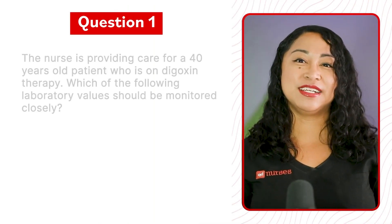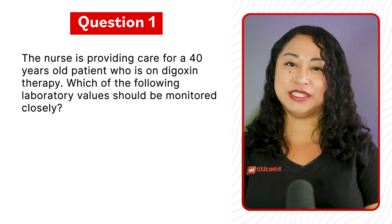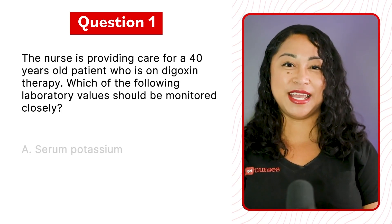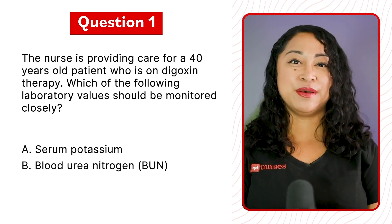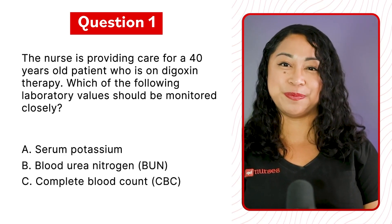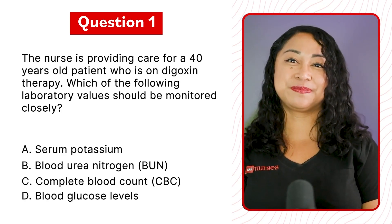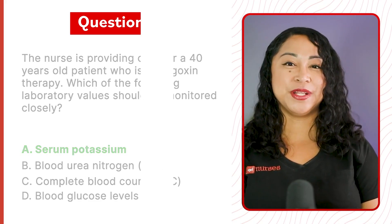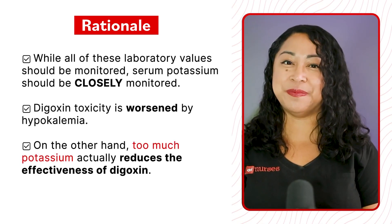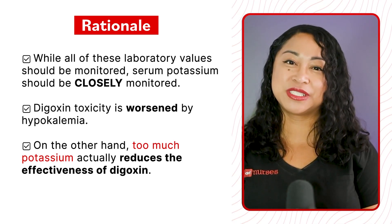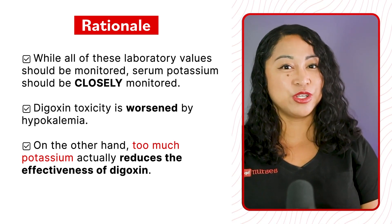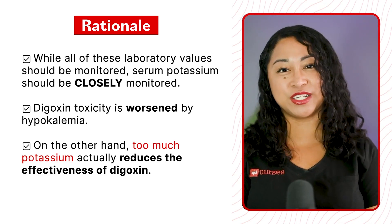Question 1: The nurse is providing care for a 40-year-old patient on digoxin therapy. Which of the following laboratory values should be monitored closely? A. Serum potassium, B. Blood urea nitrogen, C. Complete blood count, or D. Blood glucose level. The correct answer is A — serum potassium. While all these values should be monitored, serum potassium should be closely monitored because digoxin toxicity is worsened by hypokalemia. On the other hand, too much potassium actually reduces the effectiveness of digoxin.